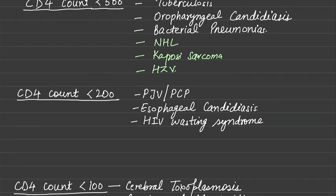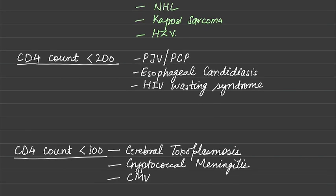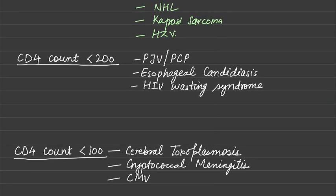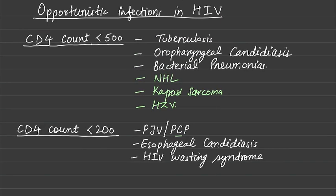The third is herpes zoster virus. Those are the infections that occur when the CD4 count is less than 500. When the CD4 count is less than 200, the infections that occur are Pneumocystis jirovecii pneumonia, also known as Pneumocystis carinii pneumonia.